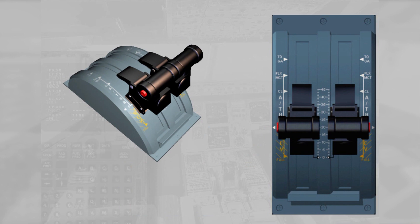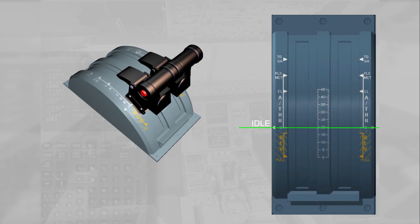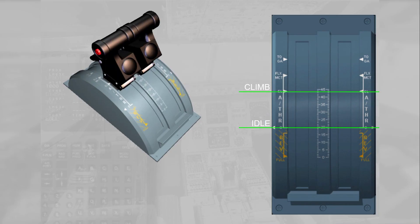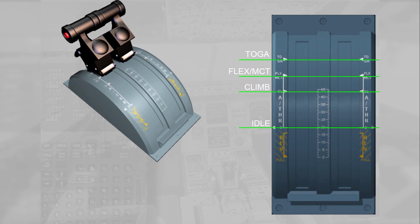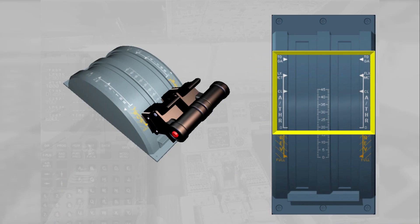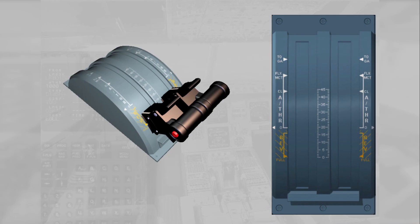When the autothrust is off, the crew controls the thrust as usual by moving the thrust levers over a quadrant. For forward thrust, this quadrant carries four physical detents or stops: idle, climb for max climb thrust, flex/MCT for flex thrust at take-off or max continuous thrust, and toga for max take-off or go-around thrust.